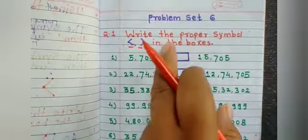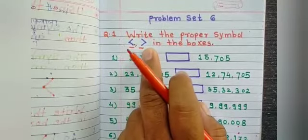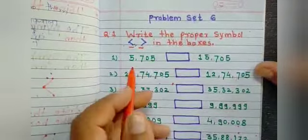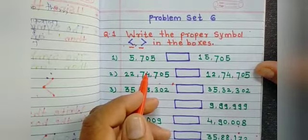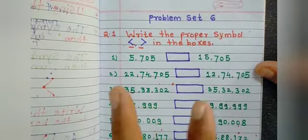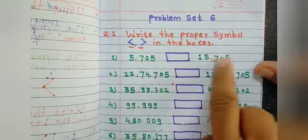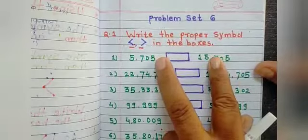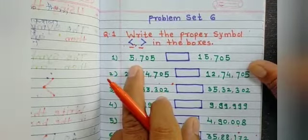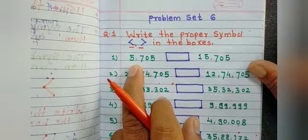In the boxes, the symbol is greater than or less than. The number having more digits is bigger. The number with fewer digits is smaller.